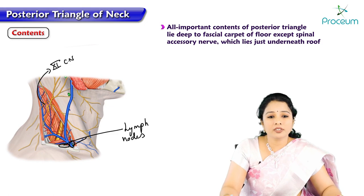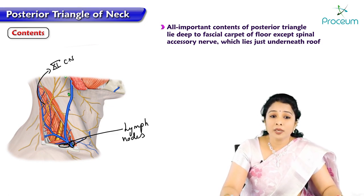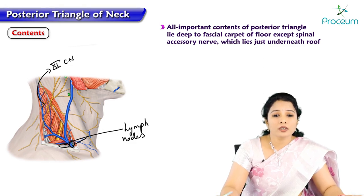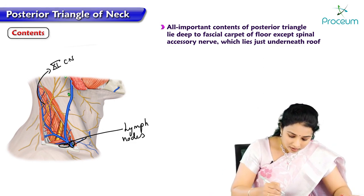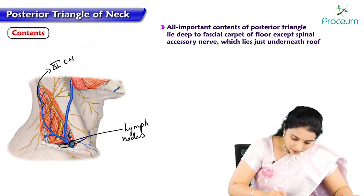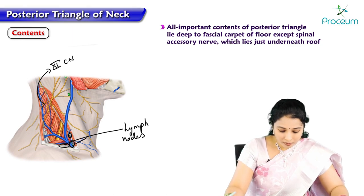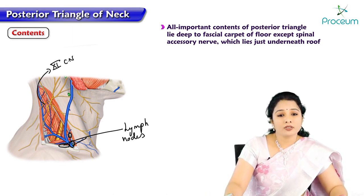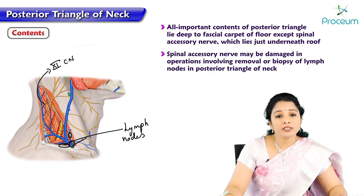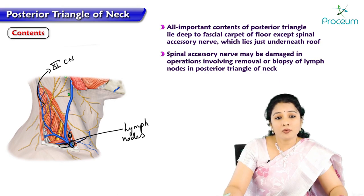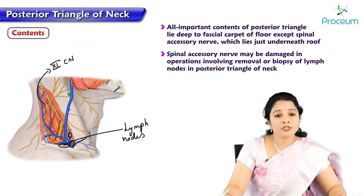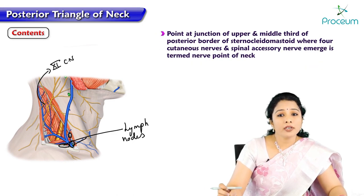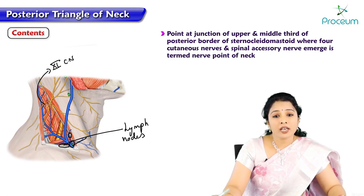The spinal accessory nerve — the 11th cranial nerve — may be damaged in operations involving removal or biopsy of lymph nodes in the posterior triangle. The point at the junction of the upper and middle third of the posterior border of sternocleidomastoid, where the four cutaneous nerves and the spinal accessory nerve emerge, is termed the nerve point of the neck.